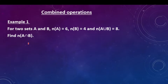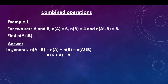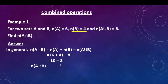We have a formula for this. In general: n(A∩B) = n(A) + n(B) − n(A∪B). Here we get n(A) = 6, plus n(B) = 4, minus n(A∪B) = 8. So 6 plus 4 gives 10, then 10 minus 8 gives 2. Therefore n(A∩B) = 2.